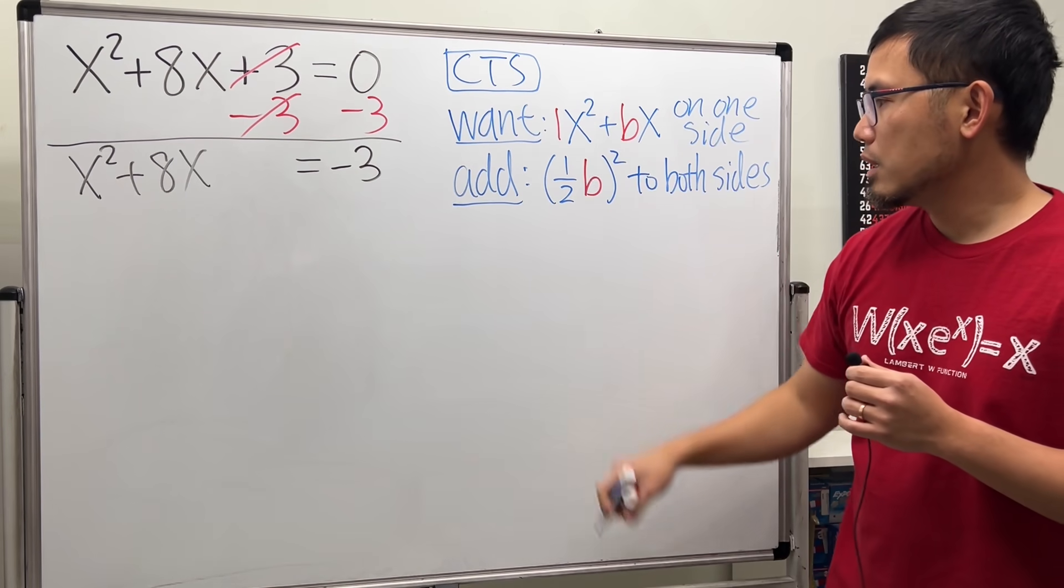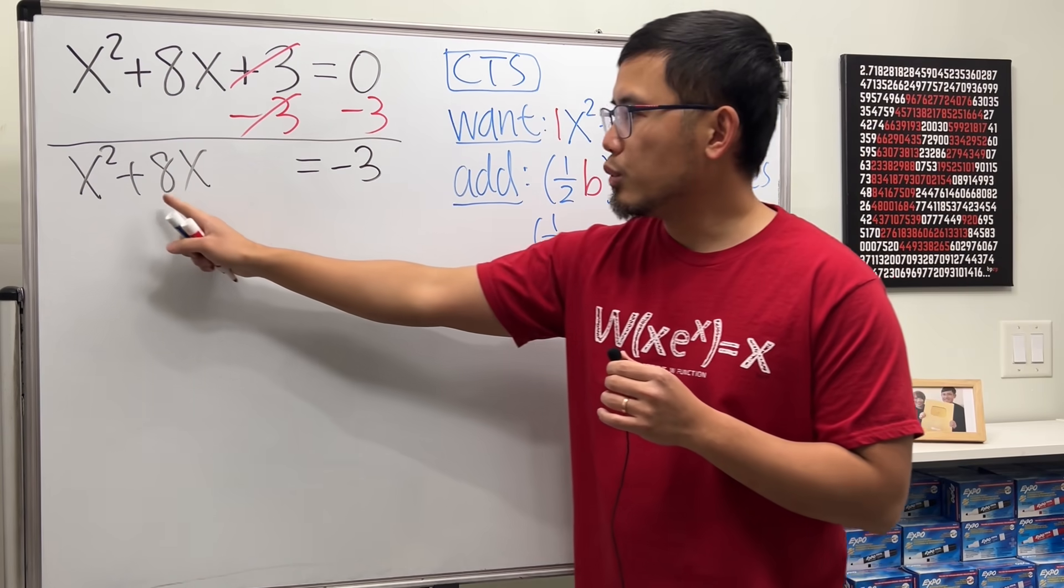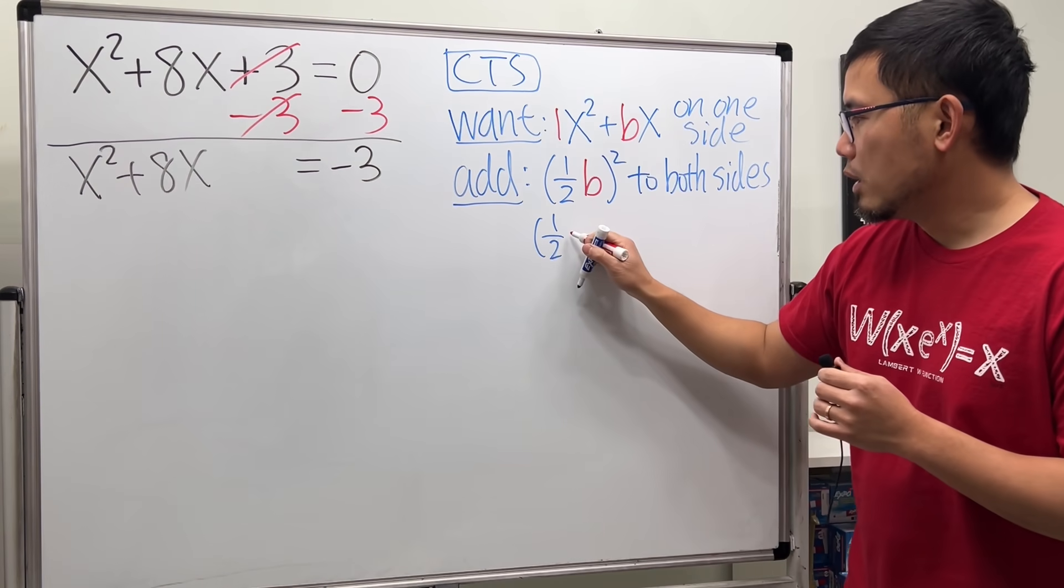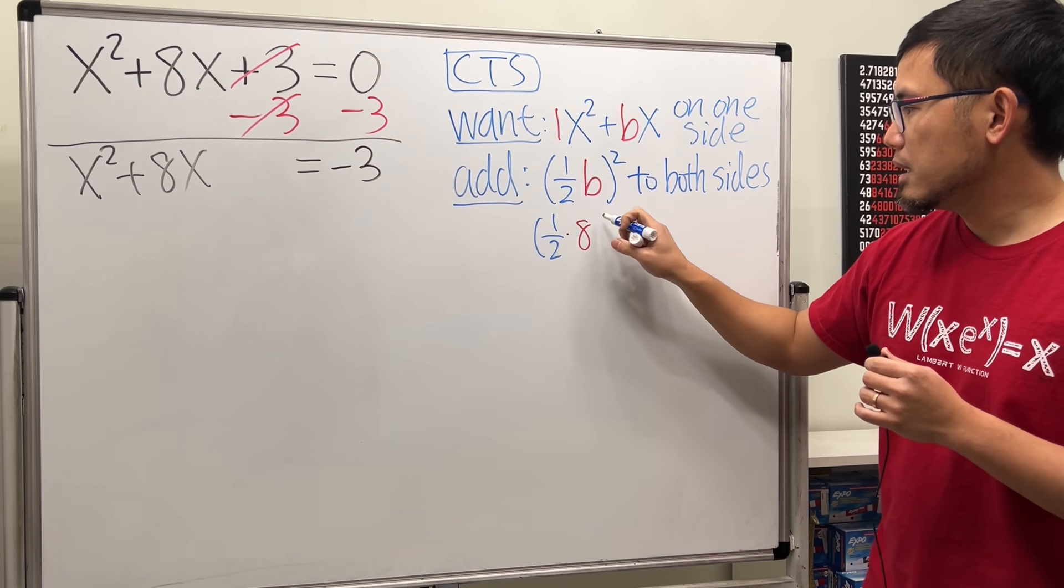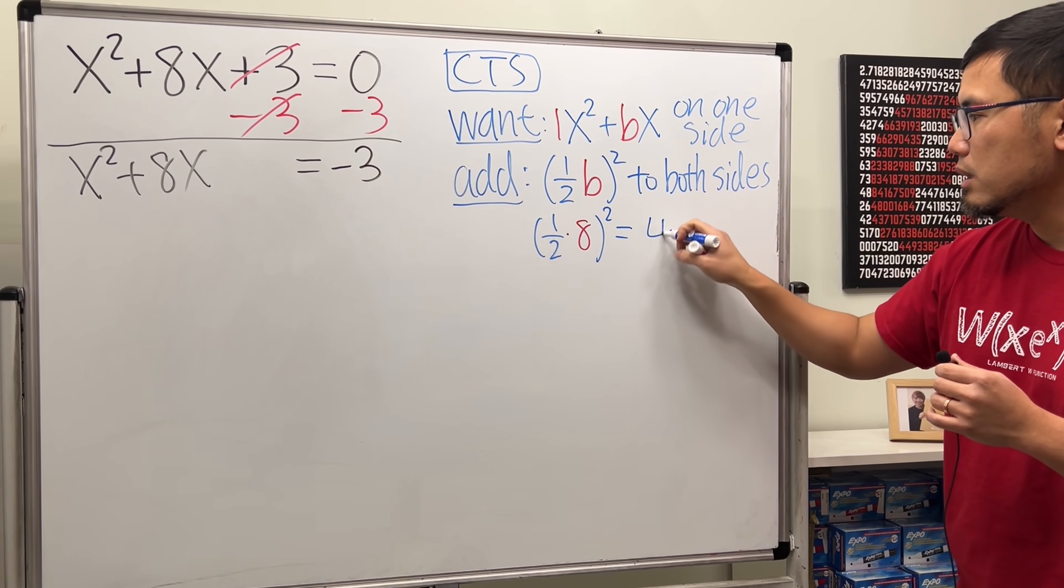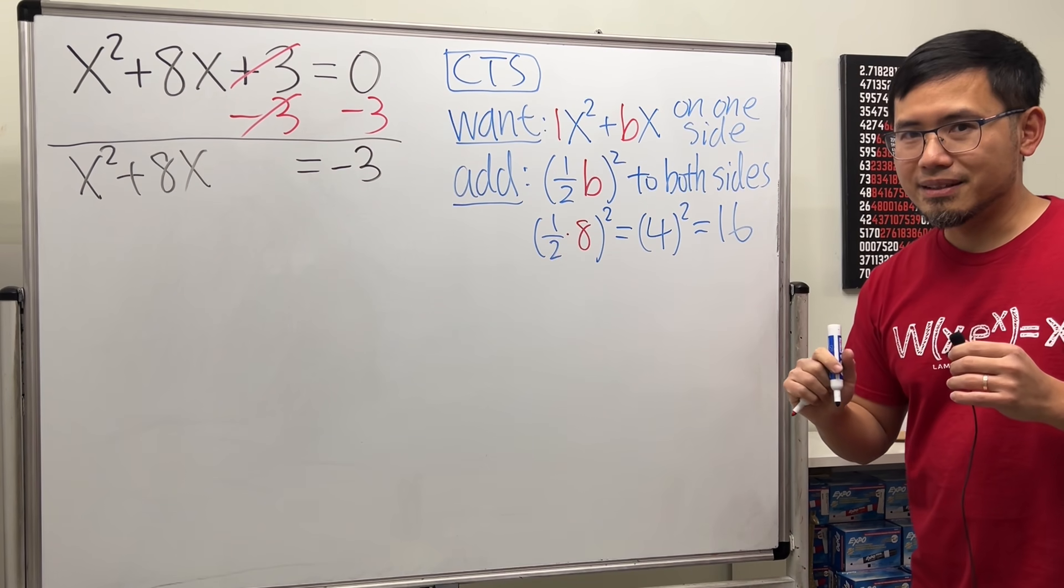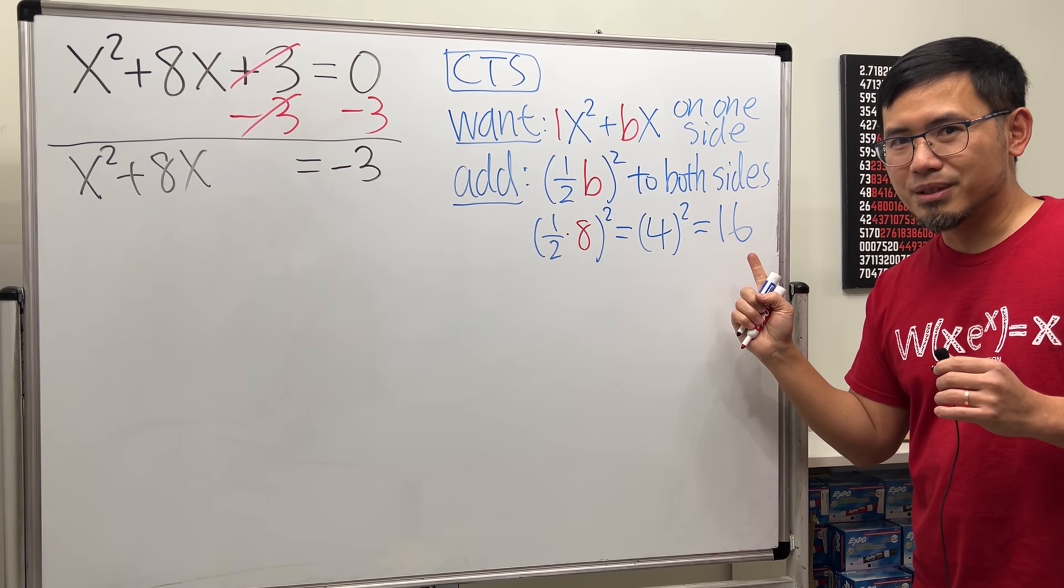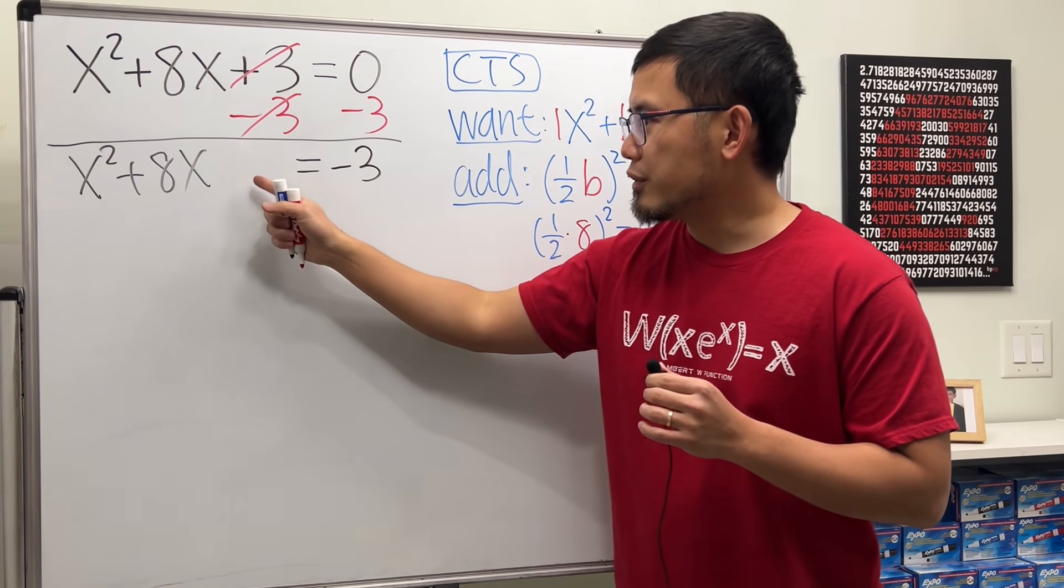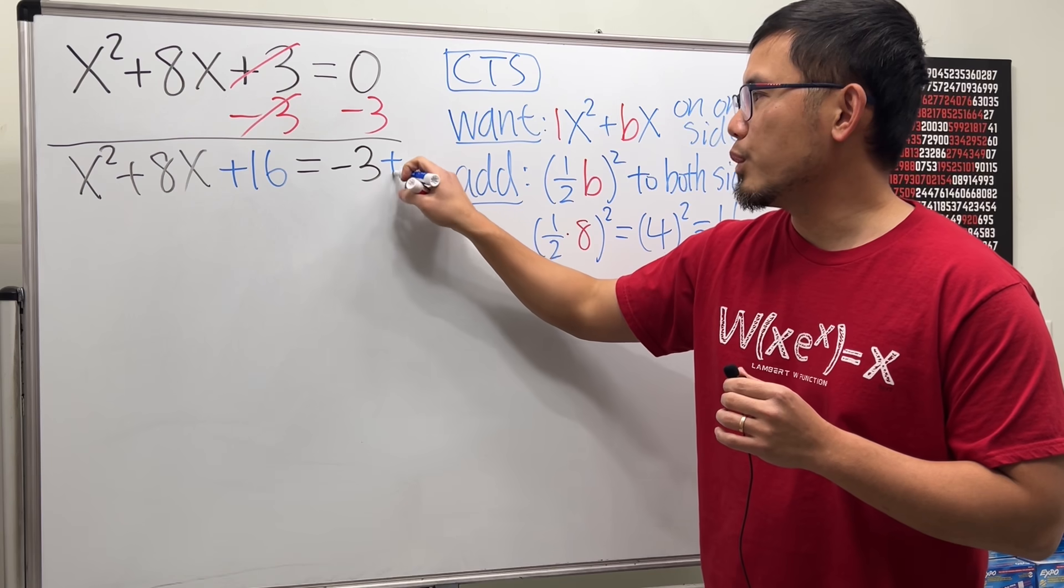So let's see what we have. In this case we have one half, and our b value is eight. So one half times eight and then square that. Work this inside out, one half of eight is four, square that we end up with 16. This is the magic number, this is the number that we have to come back here and add it to both sides of the equation.